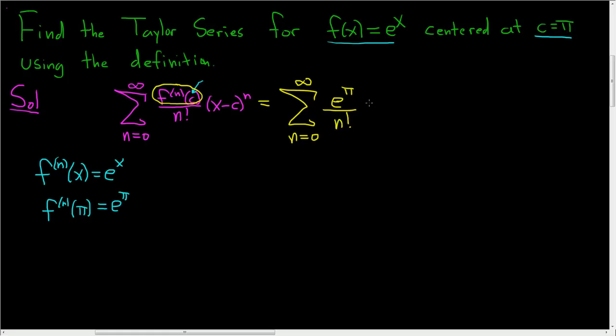It's e^π. And then we have x - c, but c is π. And then here we have the n. And that's it. That's the final answer.